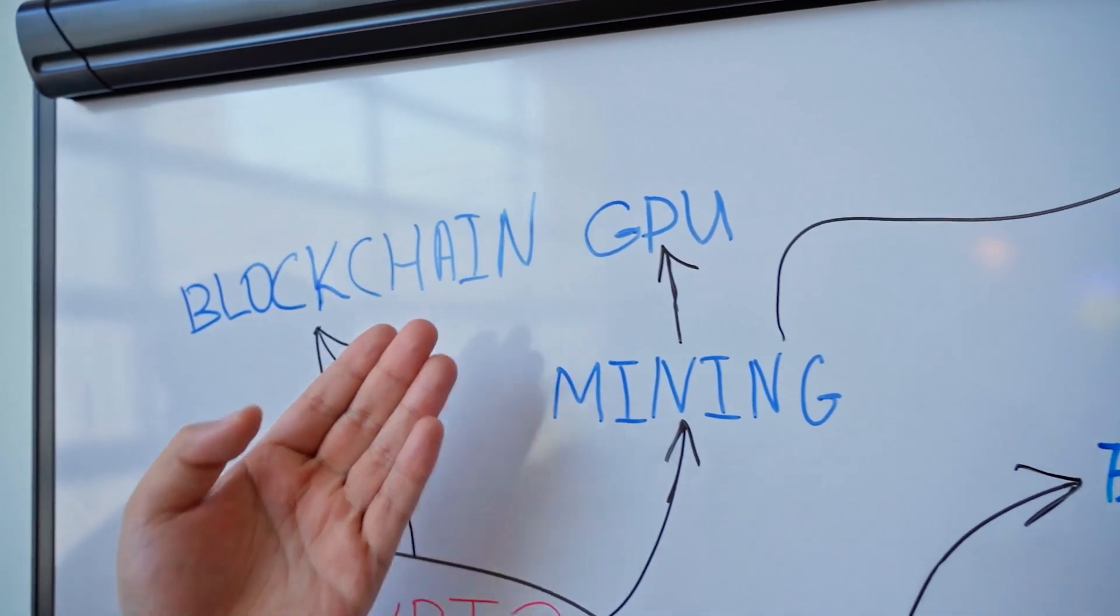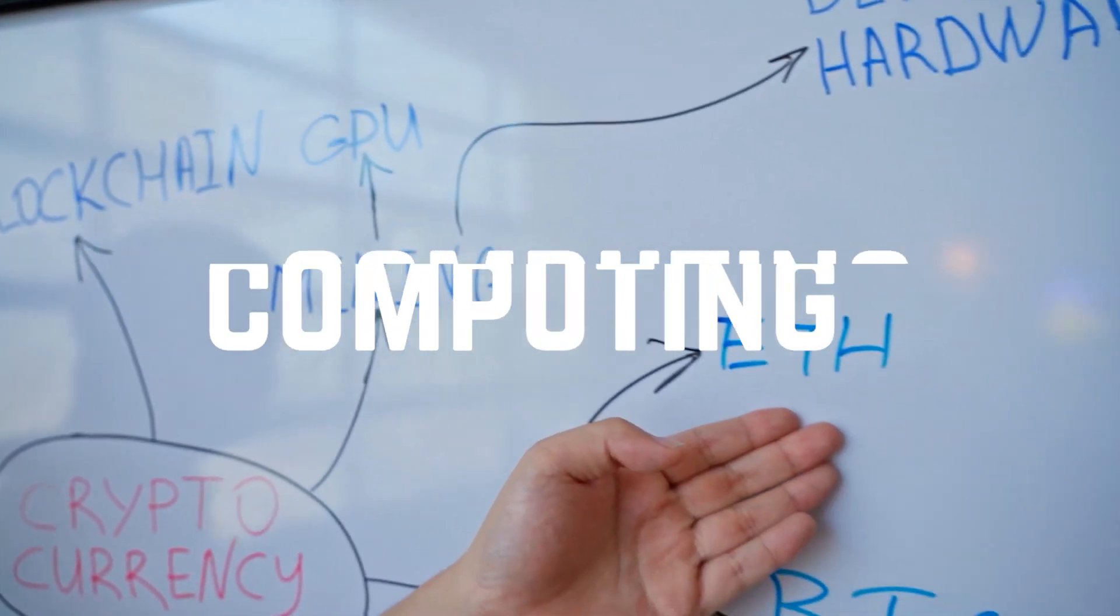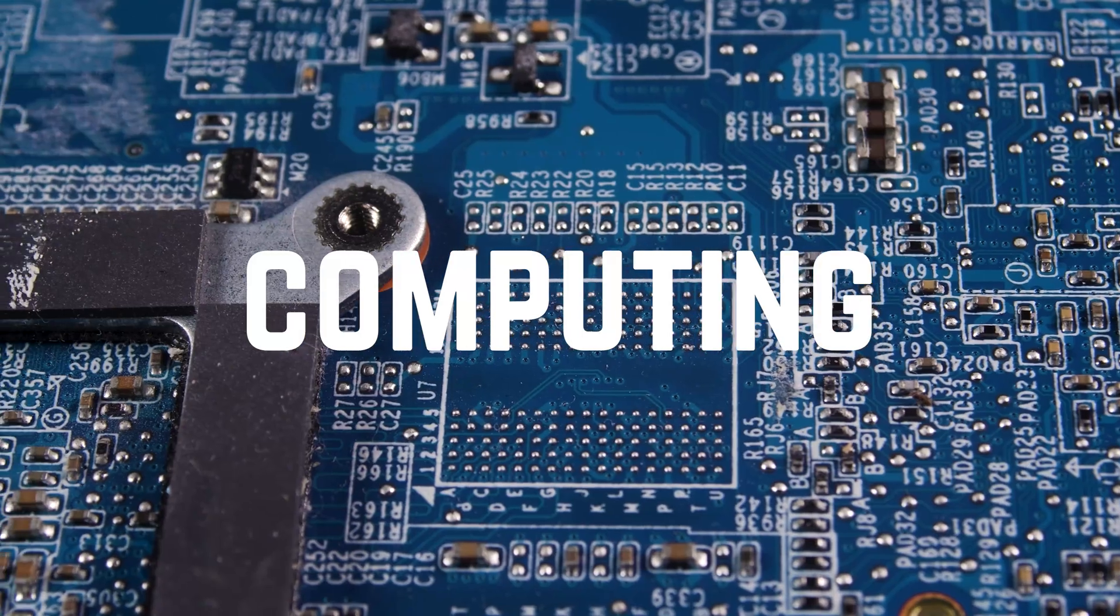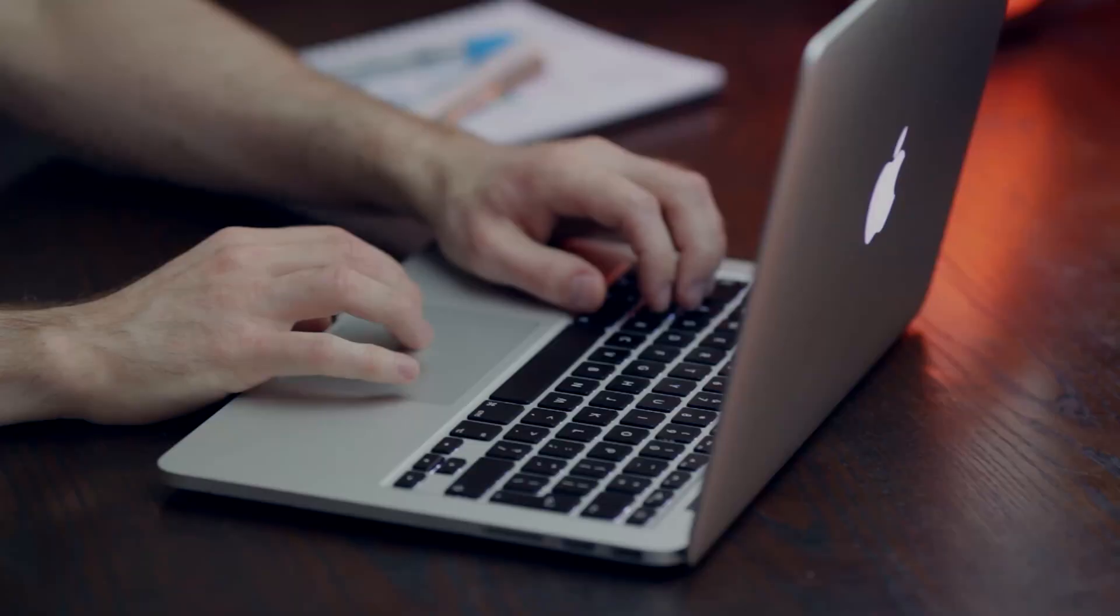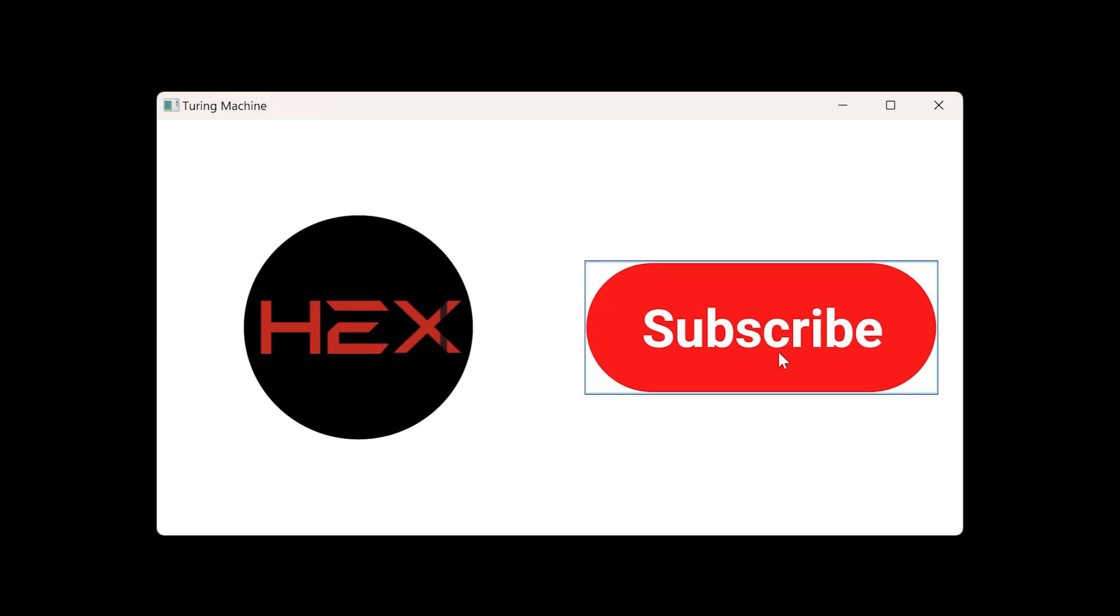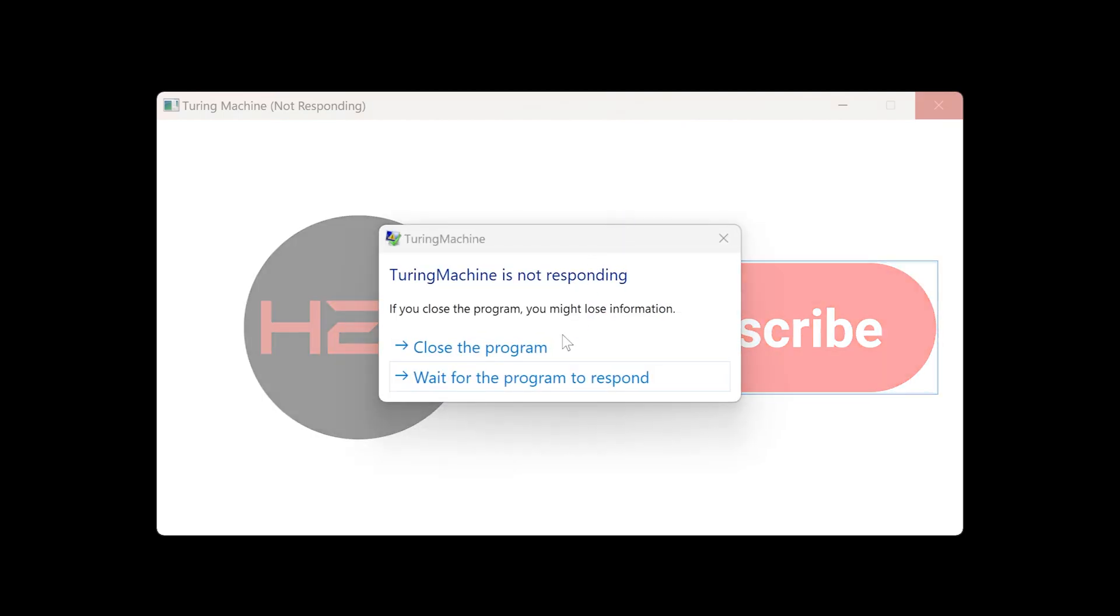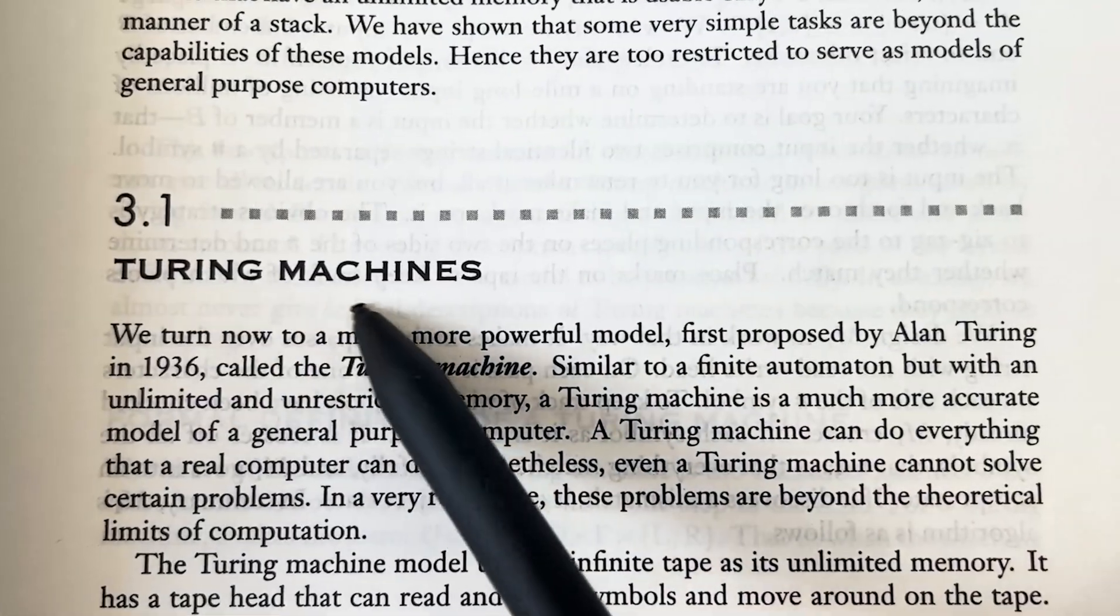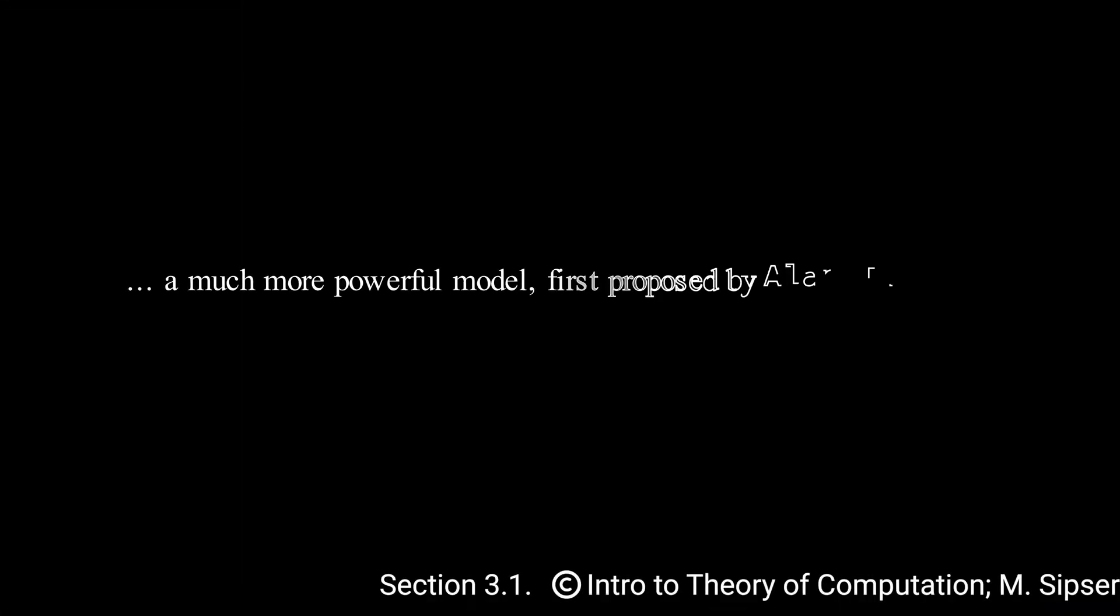As we move from digital currencies to the core of modern computing, we encounter another fascinating application of discrete math. Have you ever wondered what makes modern computers so powerful, or wondered sometime why it freezes? For example, I want to subscribe to my channel and I click the button, somehow the program doesn't respond. All these questions can be unveiled after you learn computability theory and Turing machines.